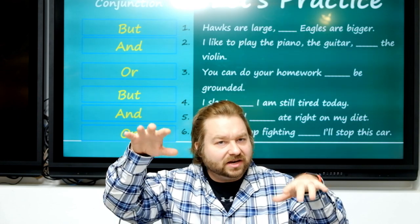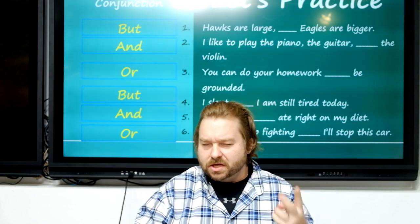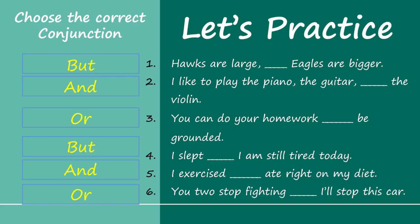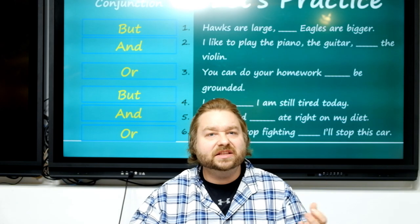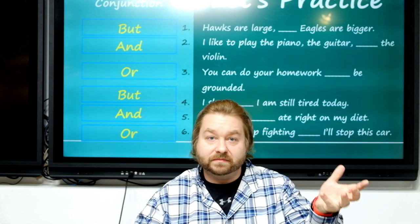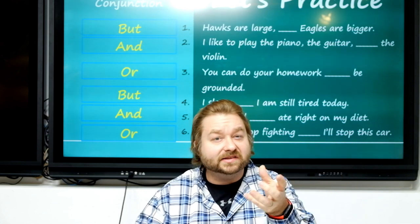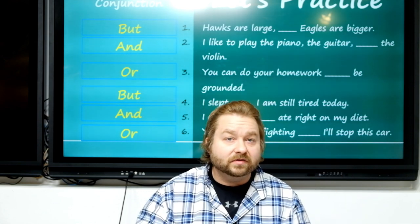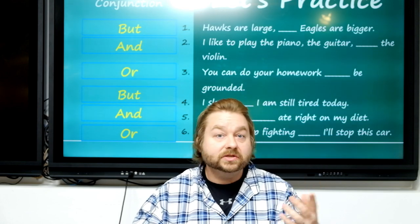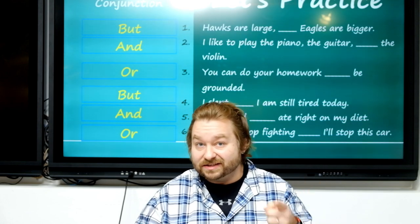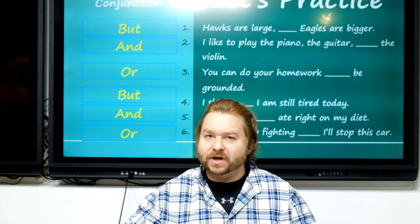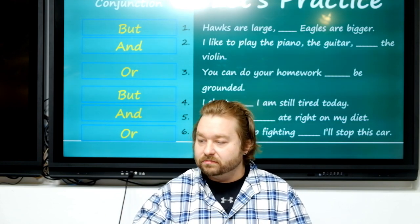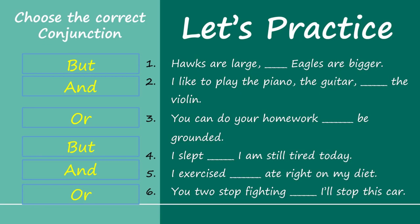Number two: 'I like to play the piano, the guitar, the violin.' I like all these three things — they all exist, all positive. So it's 'and.' We can use 'and' for two things or a list like this. And we didn't even cover lists in the lesson, but you got it on your own!